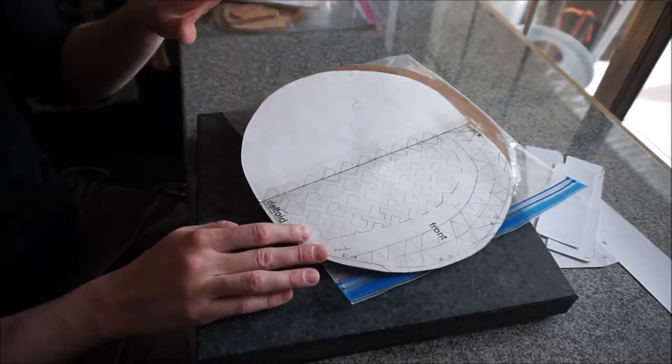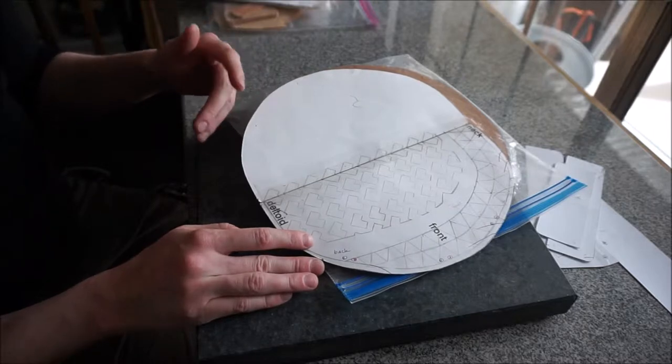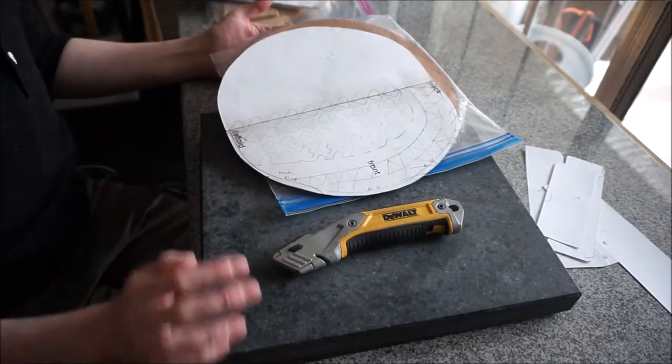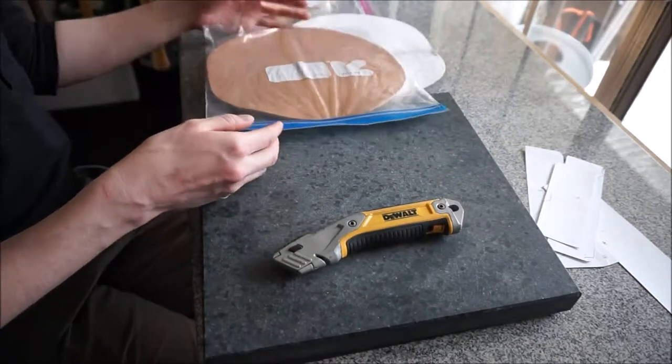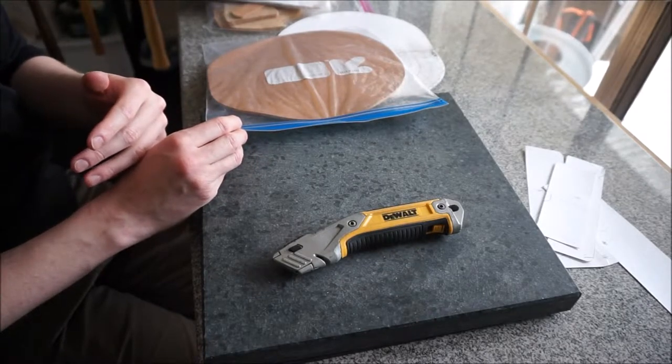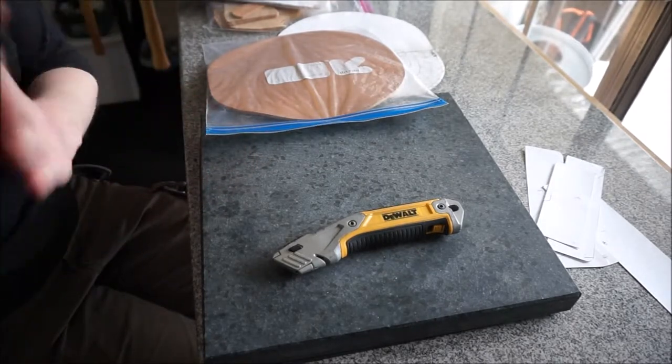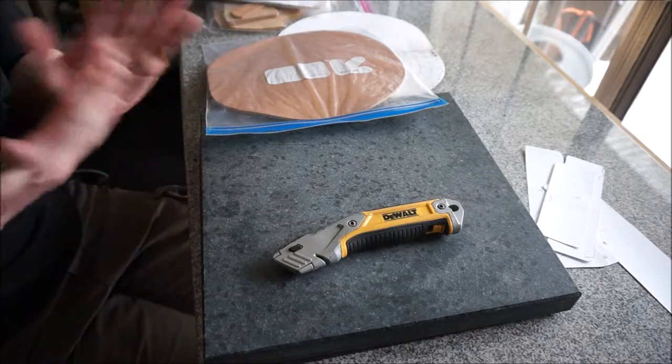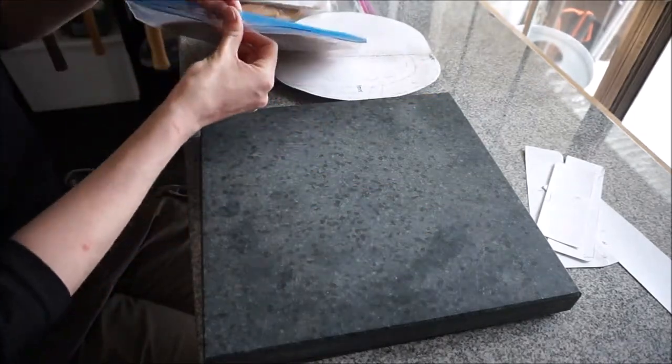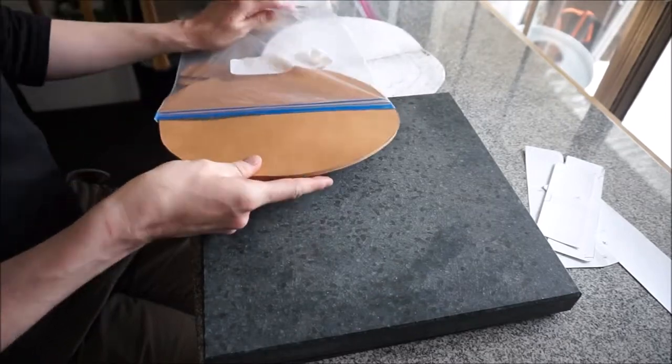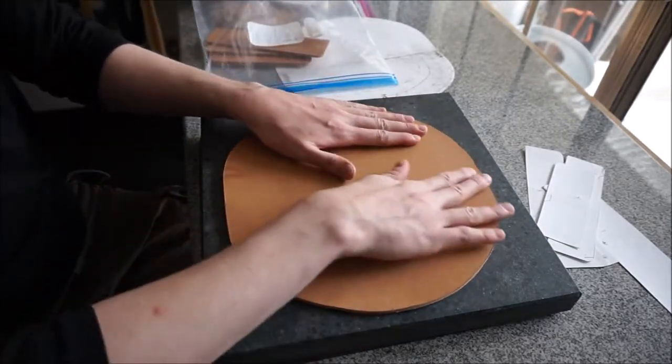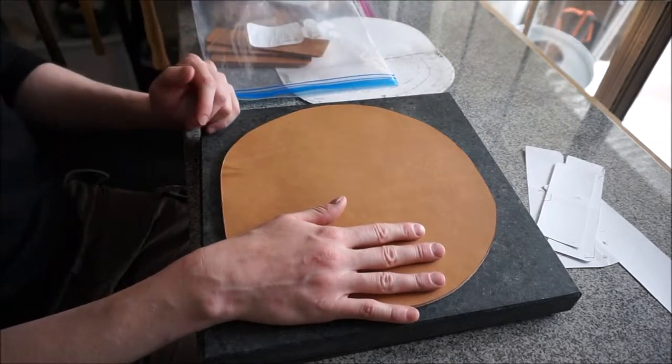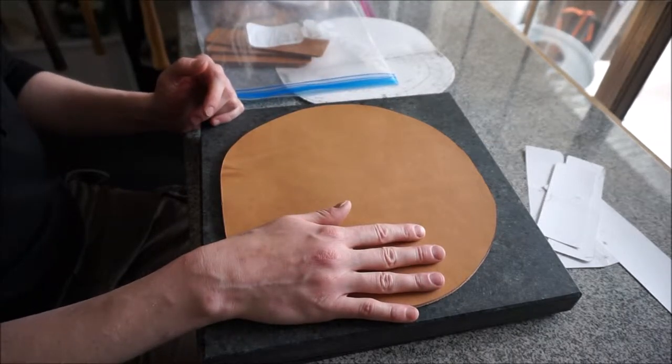Trace this onto your dry leather with just a thin point Sharpie, then cut it out with a utility knife and then you case it, which is the process of getting leather properly damp before you can work with it. I have many words to say on the subject of casing that I'm not going to reiterate here because I've got an entire tutorial on that.